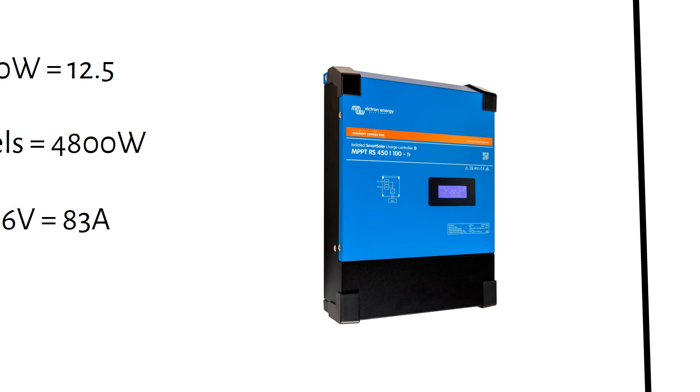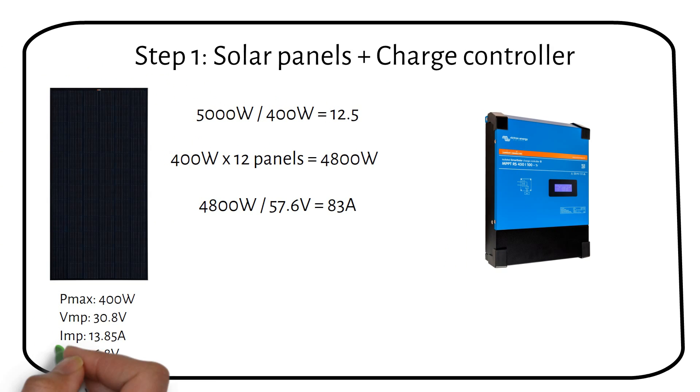Almost done. The next step involves calculating the maximum input voltage. When looking at the solar panel specifications, note the open circuit voltage, or VOC, which is 36.8V. We cannot wire all 12 panels in series, because the voltage would exceed the charge controller's 450V input limit.